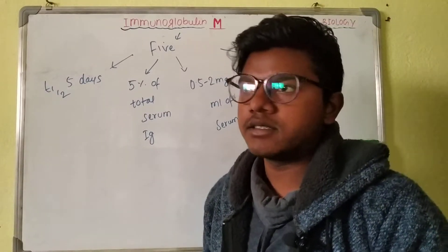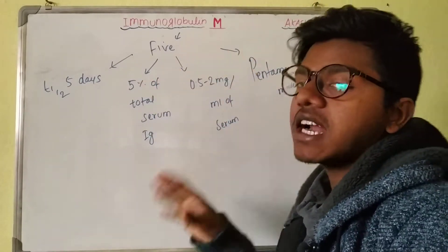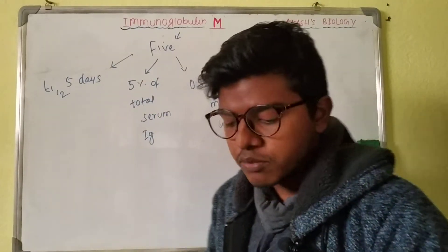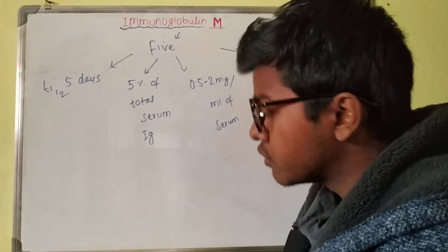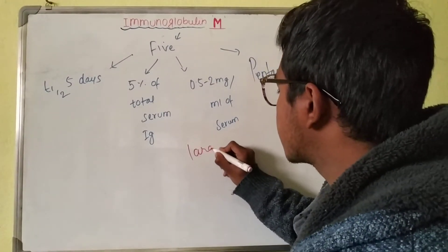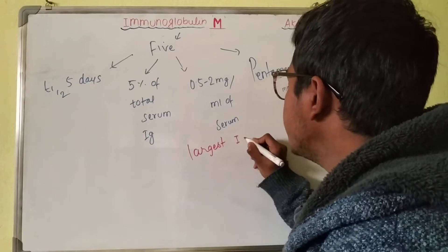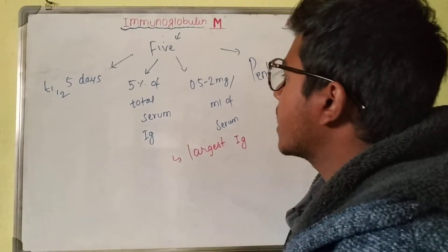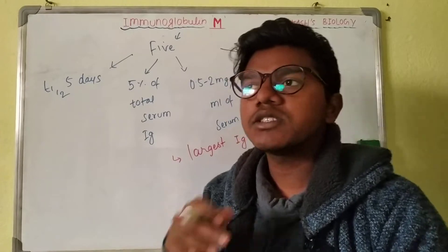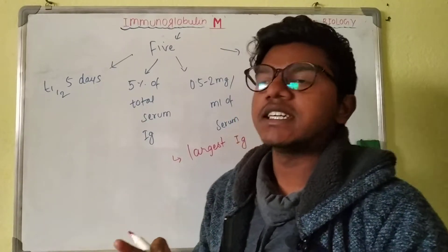IgM is the largest immunoglobulin in our body, and it comprises five percent of the total immunoglobulin present in our body.